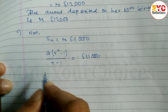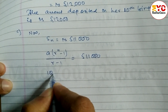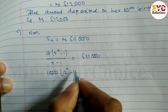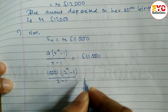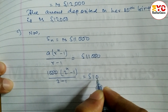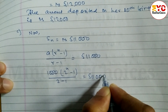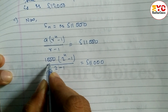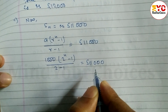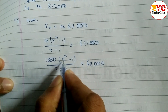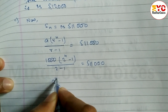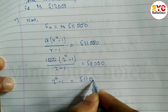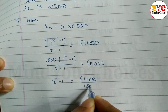A value is 1,000 and r value is 2, so we can write: 1,000 times (2 to the power n minus 1) divided by (2 minus 1) equals 511,000. Since 2 minus 1 is 1, we move 1,000 to the right side: 2 to the power n minus 1 equals 511,000 divided by 1,000.